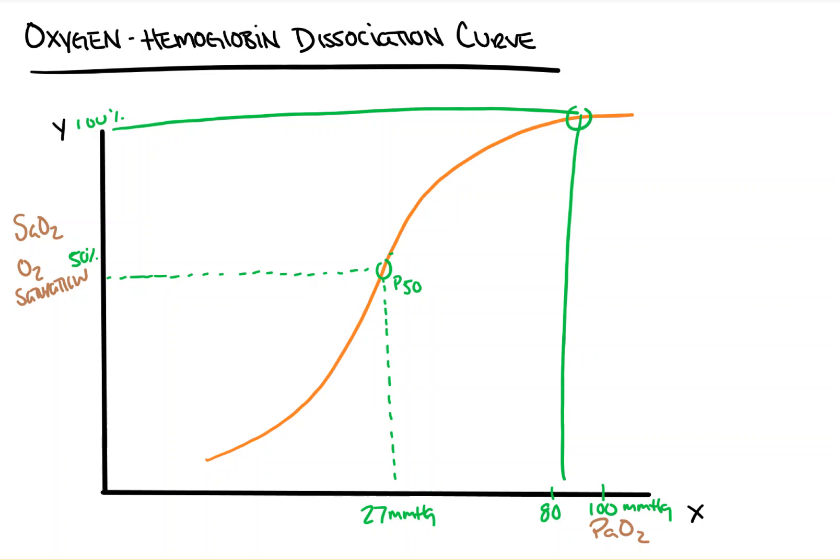We need to look at the factors that would shift the curve to either the left or the right that would keep it either tighter bound to hemoglobin or looser and easier to come off. Let's define what a right and left shift is. Defining our terms is not only important, but will make all this make sense in a way that you'll never have to memorize in the future.